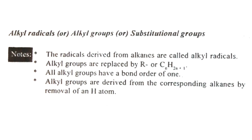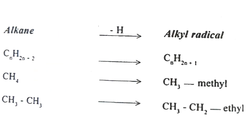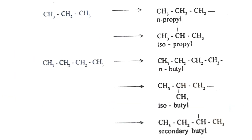The alkyl group formula is represented as R or CnH2n+1. The hydroxyl OH group is replaced by the alkyl group. The alkyl groups include CH3 (methyl), CH3CH2 (ethyl), and so on, derived from their corresponding alkanes.